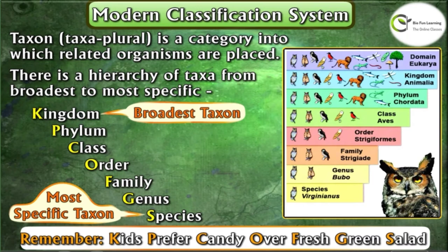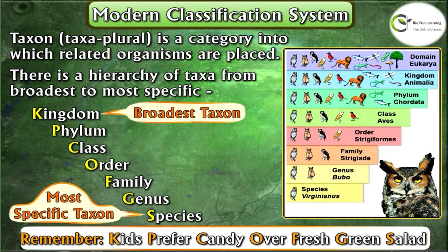Now I will tell you the easiest way to remember this hierarchy. Remember this sentence: 'Kids prefer candy over fresh green salad.' The first letter of each word helps you remember the modern classification system — K for Kingdom, P for Phylum, C for Class, O for Order, F for Family, G for Genus, S for Species. So: Kingdom, Phylum, Class, Order, Family, Genus, Species — this is the hierarchy of the modern classification system.